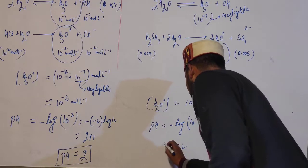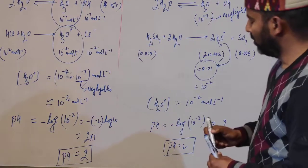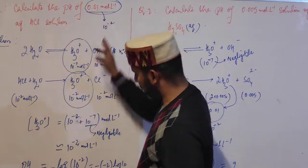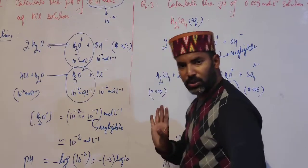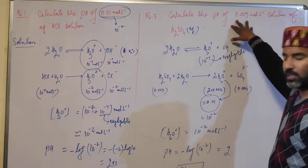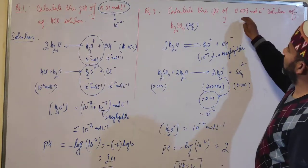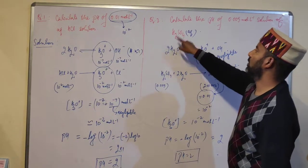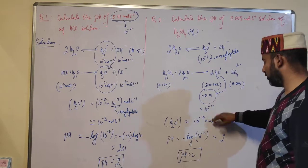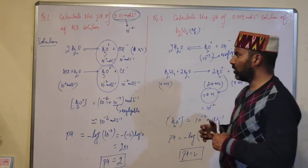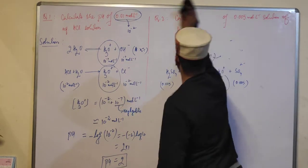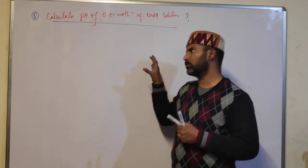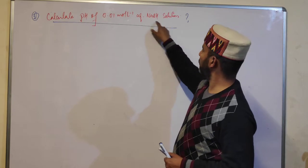So the pH of this sulfuric acid solution is also 2. It is very important to note that when calculating pH, you must consider the basicity of the acid. Here, even though the concentration is different from the HCl example, the pH is the same because H₂SO₄ is dibasic, so the hydronium ion concentration is double the acid concentration.